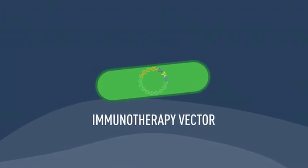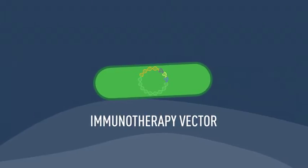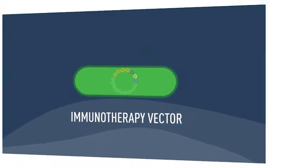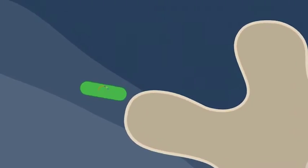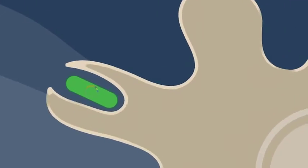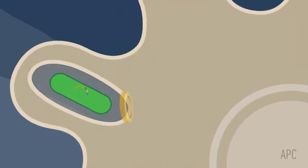This customized Advaxis neoimmunotherapy vector, specific to the neoepitopes in the patient's tumor, is shipped back to the physician. When a patient is immunized, the Advaxis neoimmunotherapy vectors are taken up by the patient's antigen-presenting cells, or APCs.